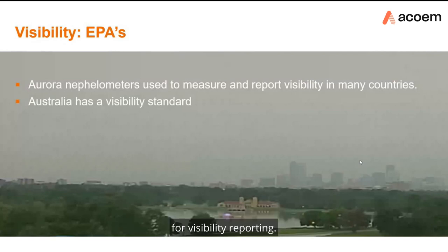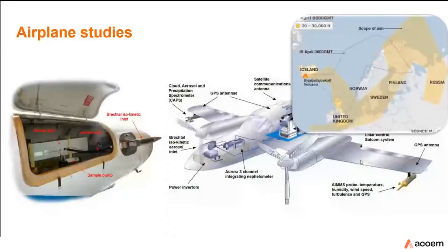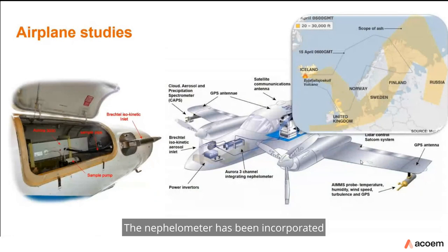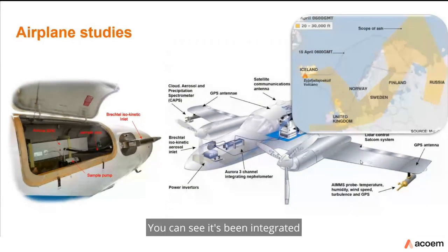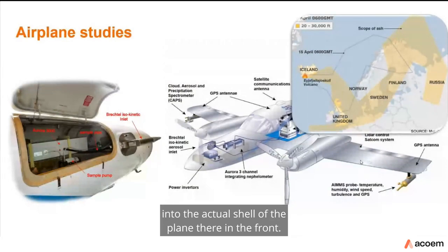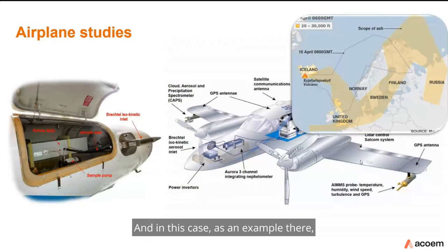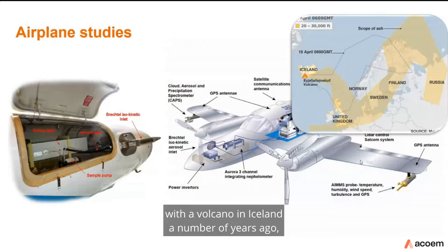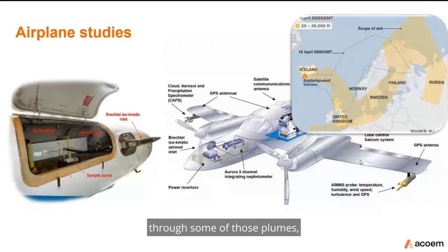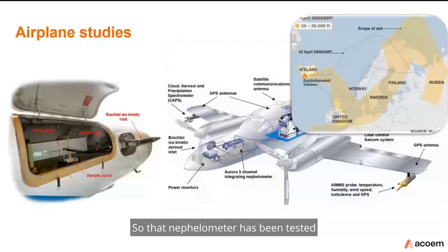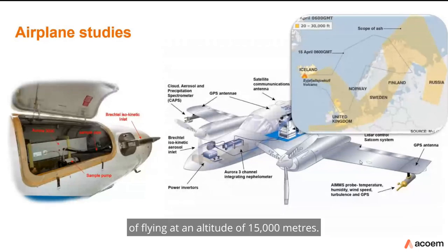The nephilometer isn't just ground-based — it has been incorporated into aircraft at different points over the years. One example is from the UK Met Office, where it was integrated into the shell of the aircraft. When a number of airlines were shut down due to the Iceland volcano eruption, that aircraft was still able to fly and take scattering measurements through volcanic plumes. That nephilometer has been tested to pressures equivalent to flying at an altitude of 15,000 meters.